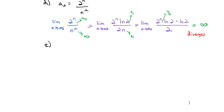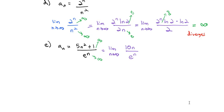For the sequence (5n squared plus 1) over e to the n, both go to infinity, so we apply L'Hôpital's: derivative gives 10n over e to the n, still infinity over infinity. Applying L'Hôpital's again gives 10 over e to the n. As n goes to infinity, e to the n is infinity, so we get 10 divided by a very large number, which approaches 0. This sequence converges.